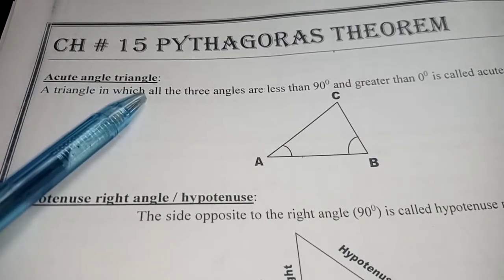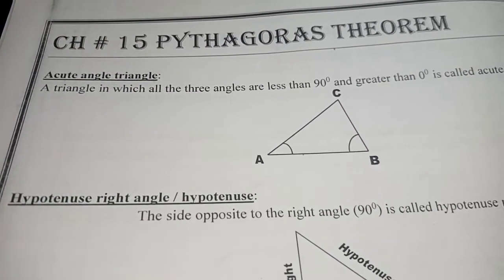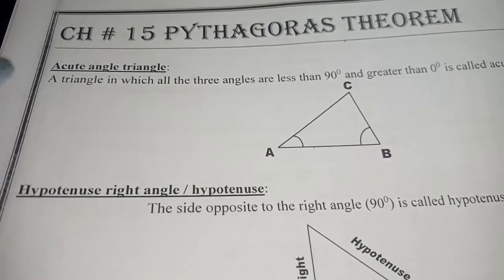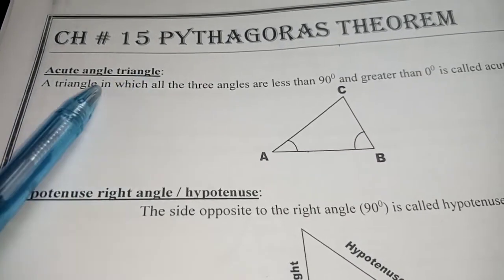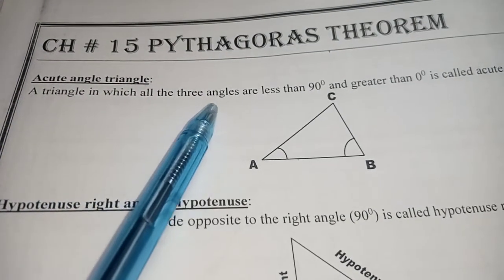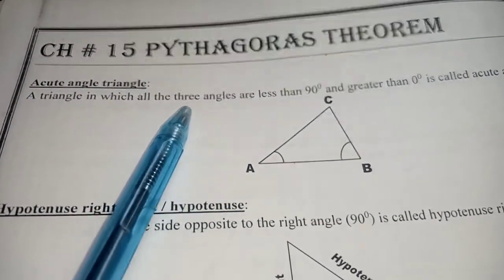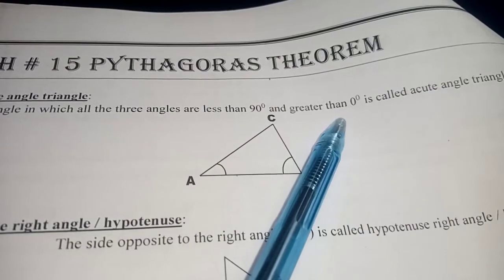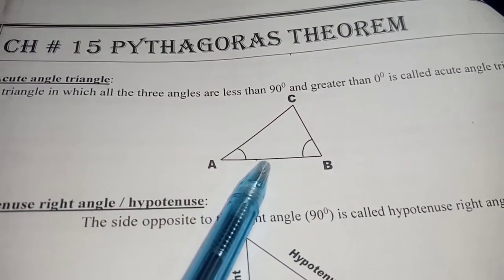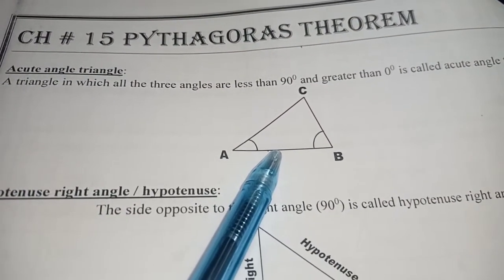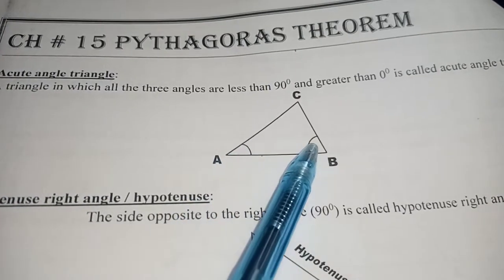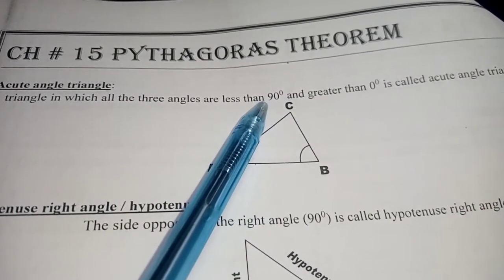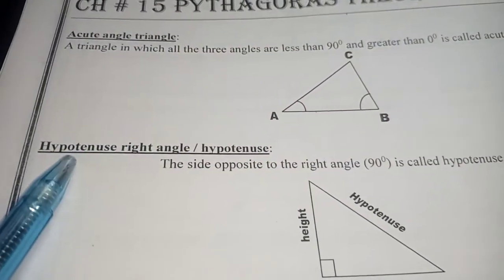So the first definition is acute angle triangle. As you know, the measure of an acute angle is always less than 90 and greater than 0 degrees. So what is an acute angle triangle? A triangle in which all three interior angles are less than 90 degrees and greater than 0 degrees is known as an acute angled triangle, in which each interior angle lies between 0 and 90 degrees.